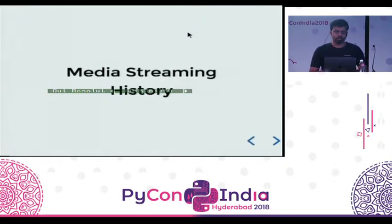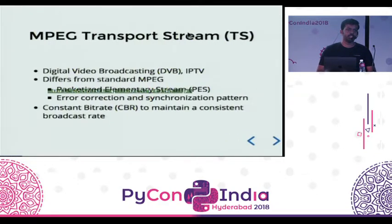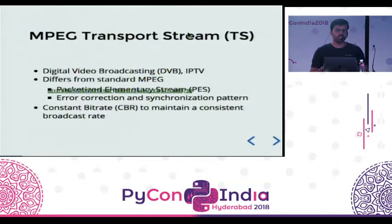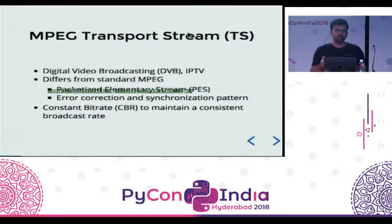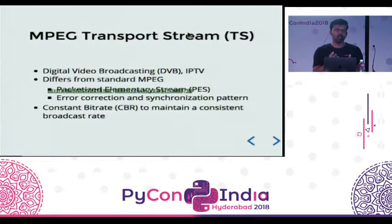To begin with, the technology that streaming started with is known as MPEG Transport Stream, commonly just referred to as transport stream. This is like the MPEG we know from our CD players. When that MPEG is packetized and we add error correction and synchronization to it, it becomes an MPEG packet stream. We add packetization because CD players are analog, and when we have to transmit through a network, we need to make it into network packets — that is where Packetized Elementary Stream comes in.